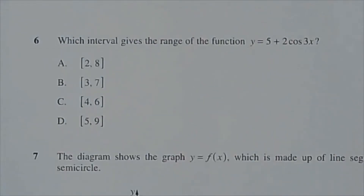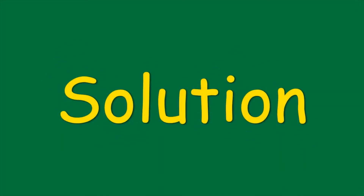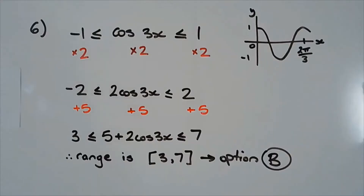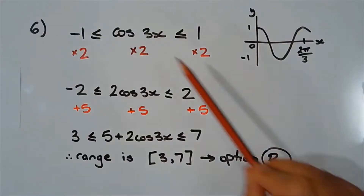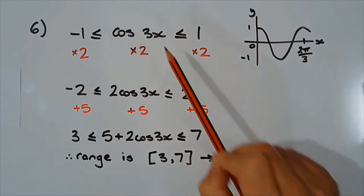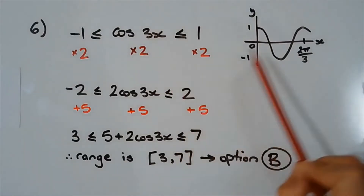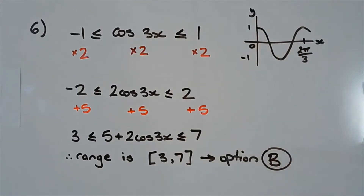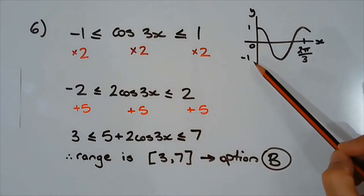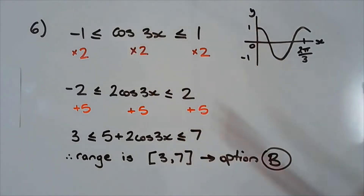Question 6. Which interval gives the range of the function y equals 5 plus 2 cos 3x? Consider y equals cos 3x. The 3x compresses the curve horizontally by a factor of 3, but has no effect on the range. The range of cos 3x is still from negative 1 to 1.